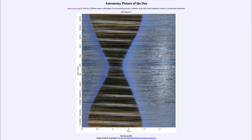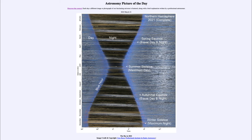We can label some of the areas to get a better understanding of what we're actually seeing here. The brighter areas to the left and right are day, and the dark areas in the middle are night. However, you can see some bands going across the night section that are brighter in general.